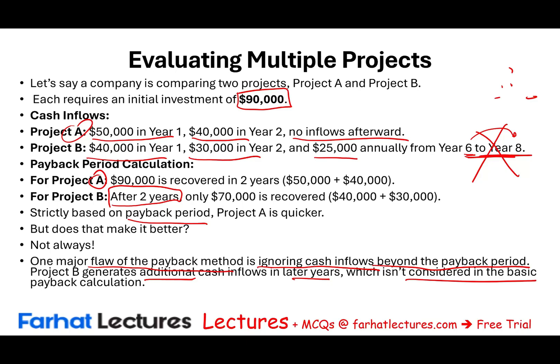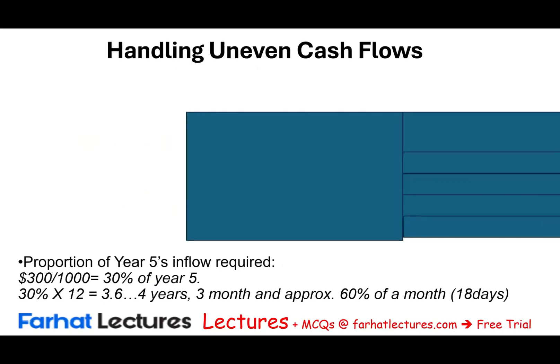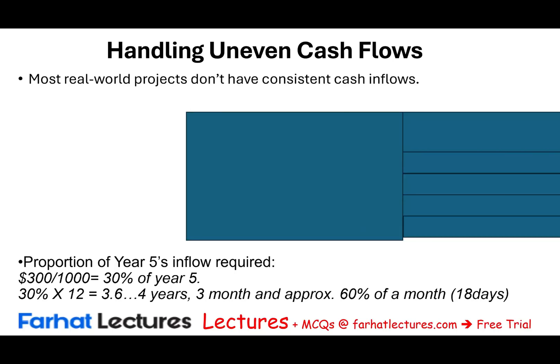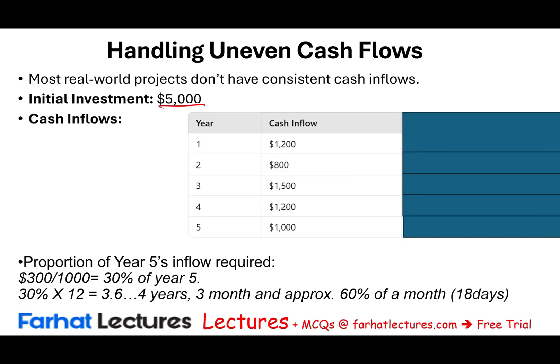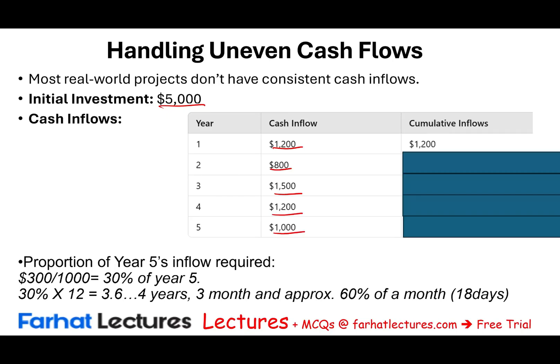Now let's look at how to compute the payback period with uneven cash flows, since in the real world most inflows are uneven. Assume you invest $5,000 in a project with the following cash flows: year one $1,200; year two $800; year three $1,500; year four $1,200; year five $1,000. We need to compute when you get your money back.